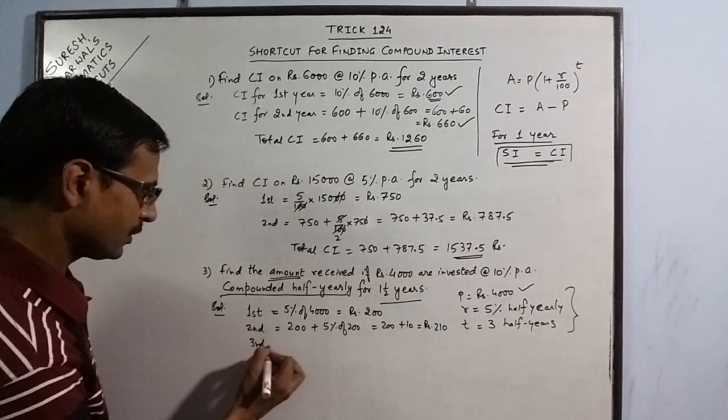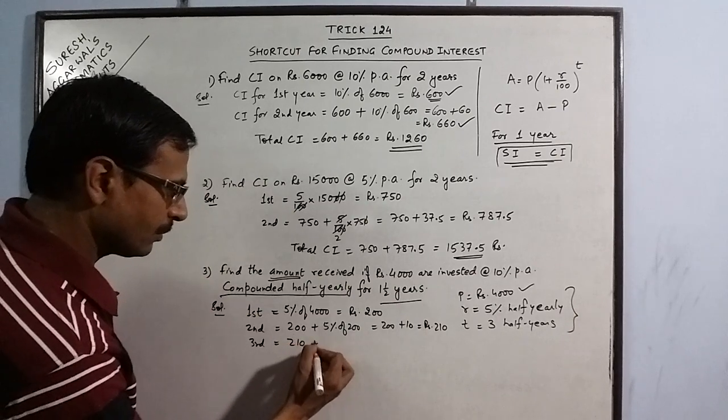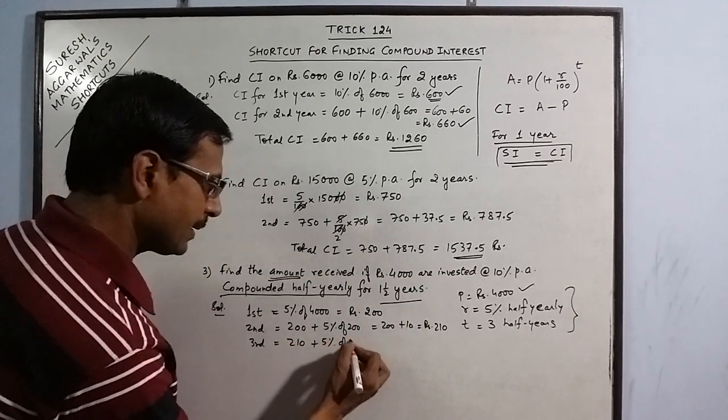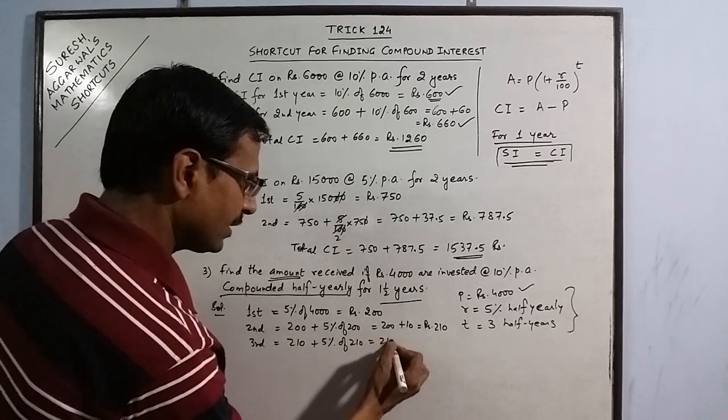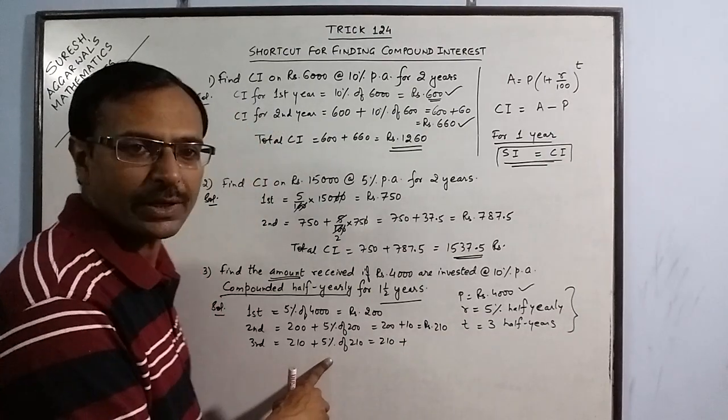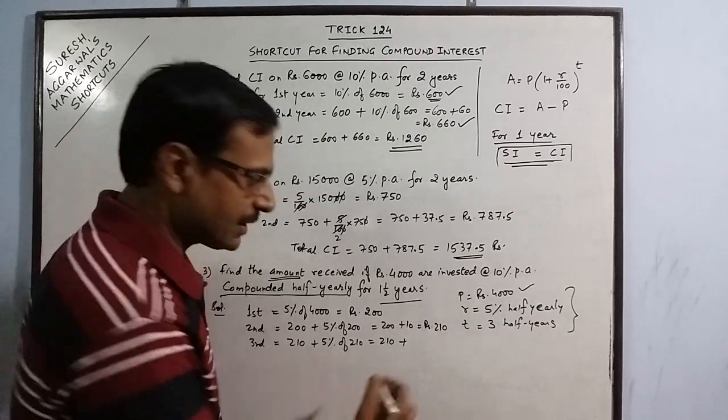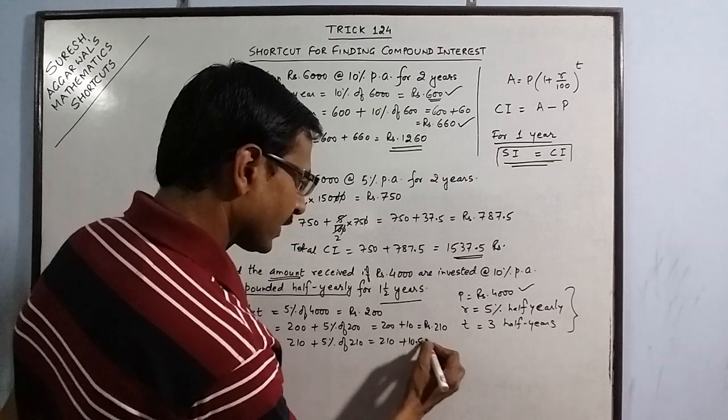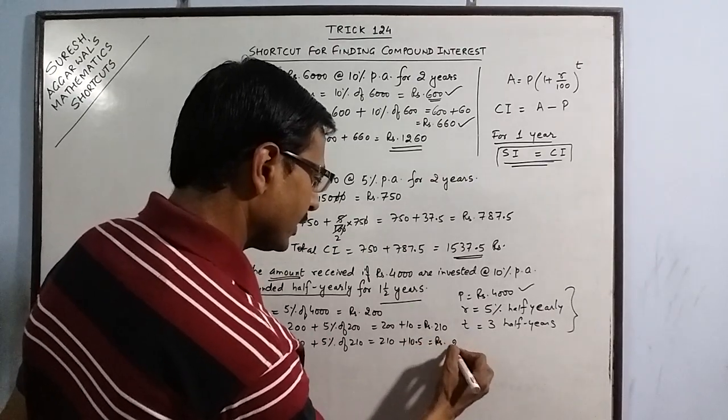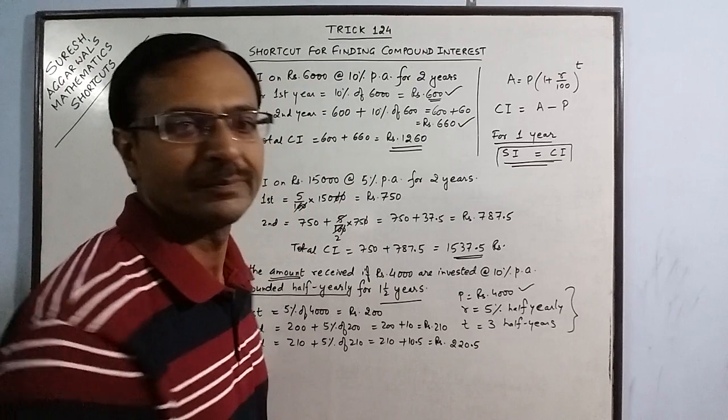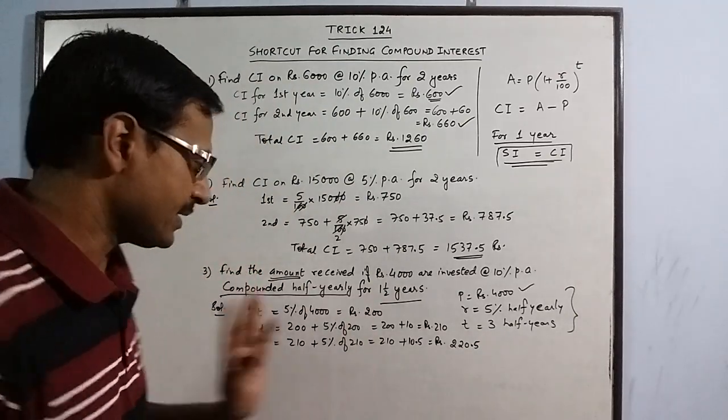Third, 210 plus 5% of 210. 210 plus 5% of 210 is 10.5 rupees. Rs. 220.5. These are the 3 interests.